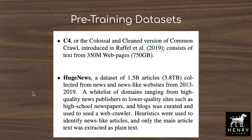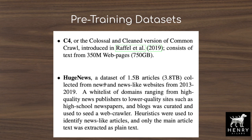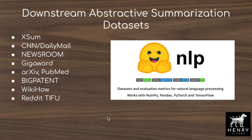Pegasus also explores the dataset used for pre-training. The C4 dataset—the colossal and clean version of Common Crawl used in T5—is compared to a new dataset called HugeNews, a collection of news and news-like websites filtered from high-quality publishers. The idea is to pre-train on this news article dataset rather than the entire internet, to see if this results in better performance, even though fine-tuning on tasks like summarizing arXiv papers is still a large domain shift.